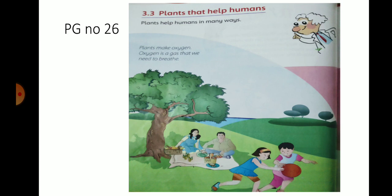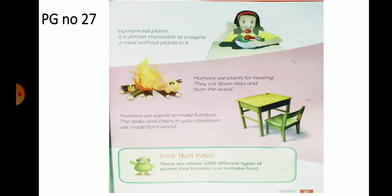Page number 27. Humans eat plants. It is almost impossible to imagine a meal without plants in it. Humans plants ko apne khane mein bhi istamal karte hain. Aur hamara koi bhi meal aisa nahi hota jis mein plants na hon.